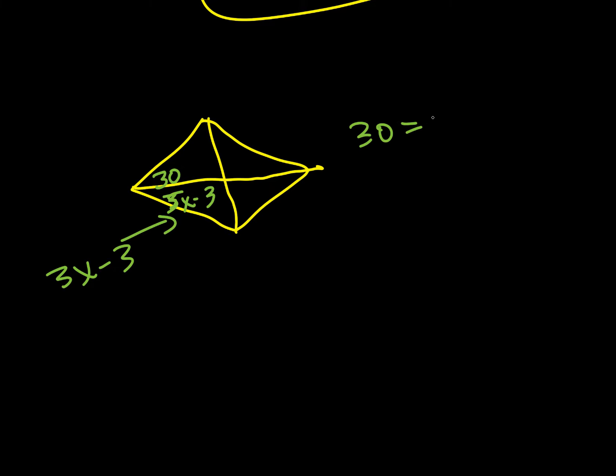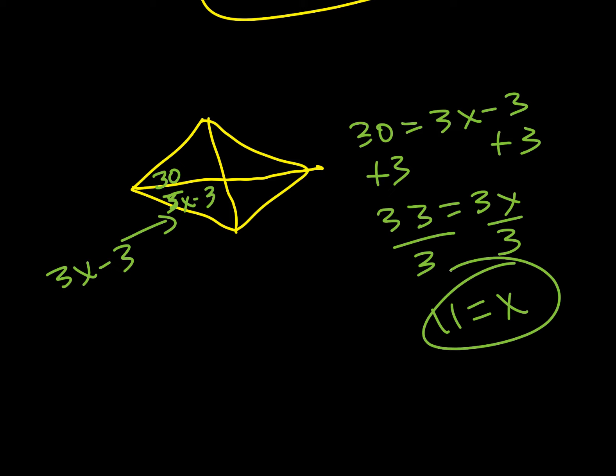So we can say 30 equals 3x minus 3. Add 3 to both sides. 33 equals 3x. Divide by 3. 11 equals x. And that's all we needed to do on that one.